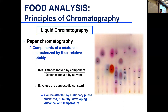However, paper chromatography has a lot of variability. Rf is affected by how thick the paper is, the humidity in the developing chamber, the developing distance, and the temperature. All of these factors can influence your Rf value.